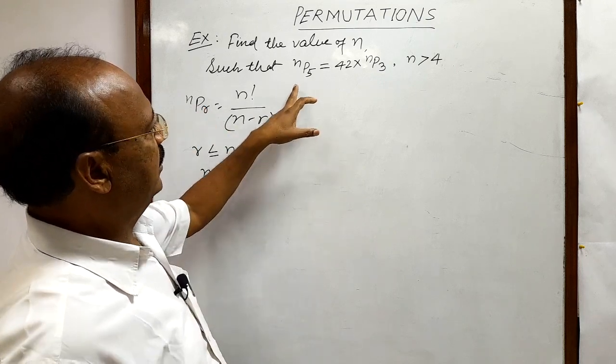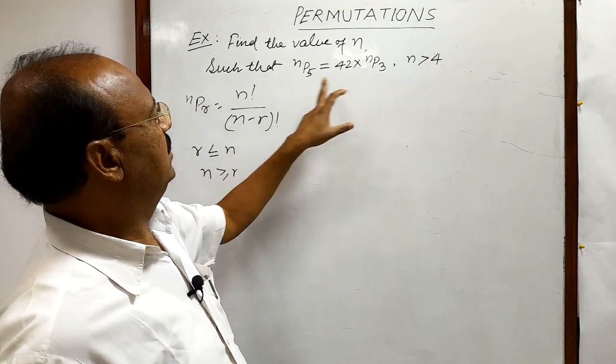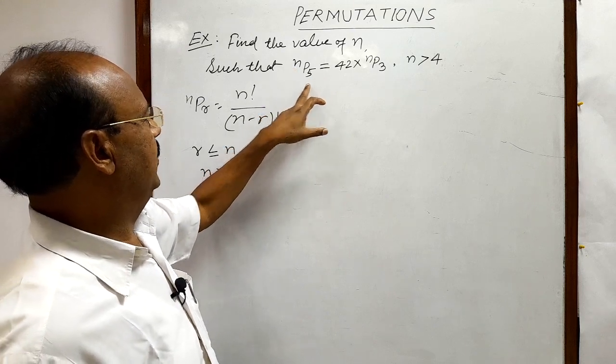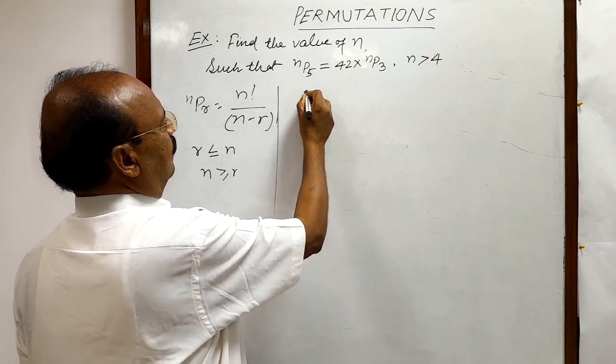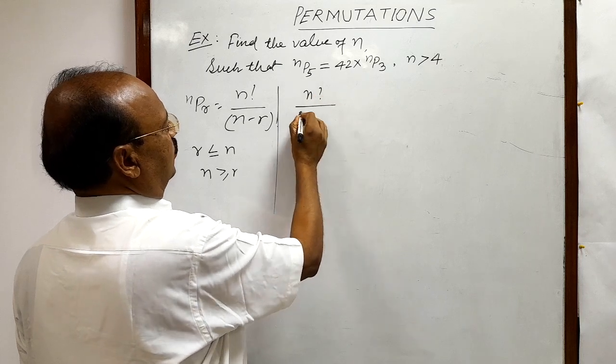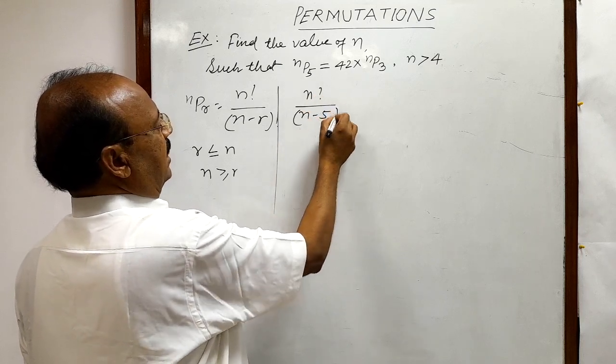By using this formula, let us expand it. So, in the left hand side, Np5 can be written as N factorial by N minus 5 factorial.